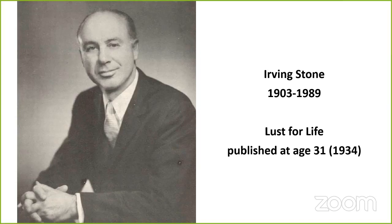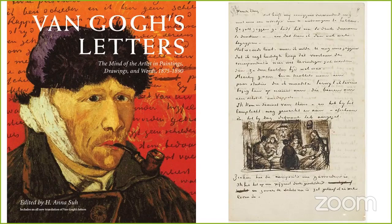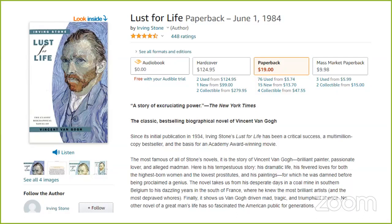The novel was largely based on the Van Gogh letters — Vincent and his brother Theo exchanged letters throughout their adulthood, and a lot of the book was based on letters Vincent wrote to Theo that Theo saved. Stone also did extensive research and filled in some gaps. The book has a four-and-a-half star rating on Amazon and is highly regarded by both the public and historians and critics.